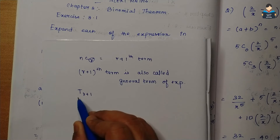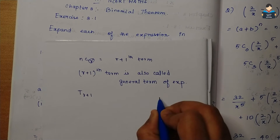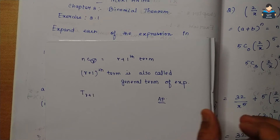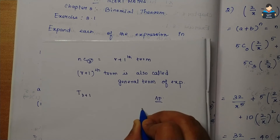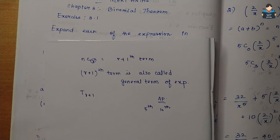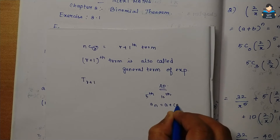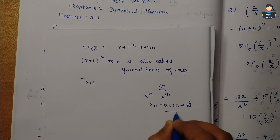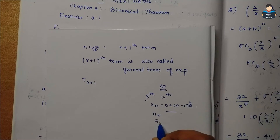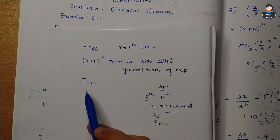Last year in 10th grade we learned AP. In AP we have a series, number of terms. For the 5th term or 10th term, we used the formula: a_n = a + (n-1)d. We substitute to find A5, A10. Similarly here.